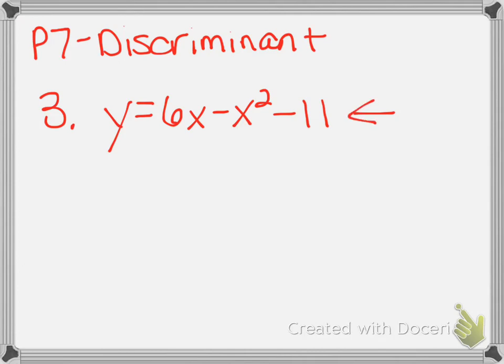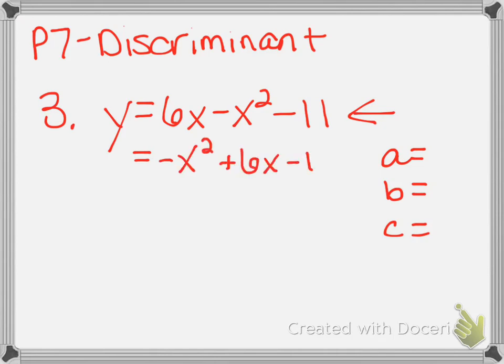The first thing you need to do is put it in order so you correctly identify a, b, and c. This quadratic should look like negative x squared plus 6x minus 11. That means a is negative 1, b is positive 6, and c is negative 11.